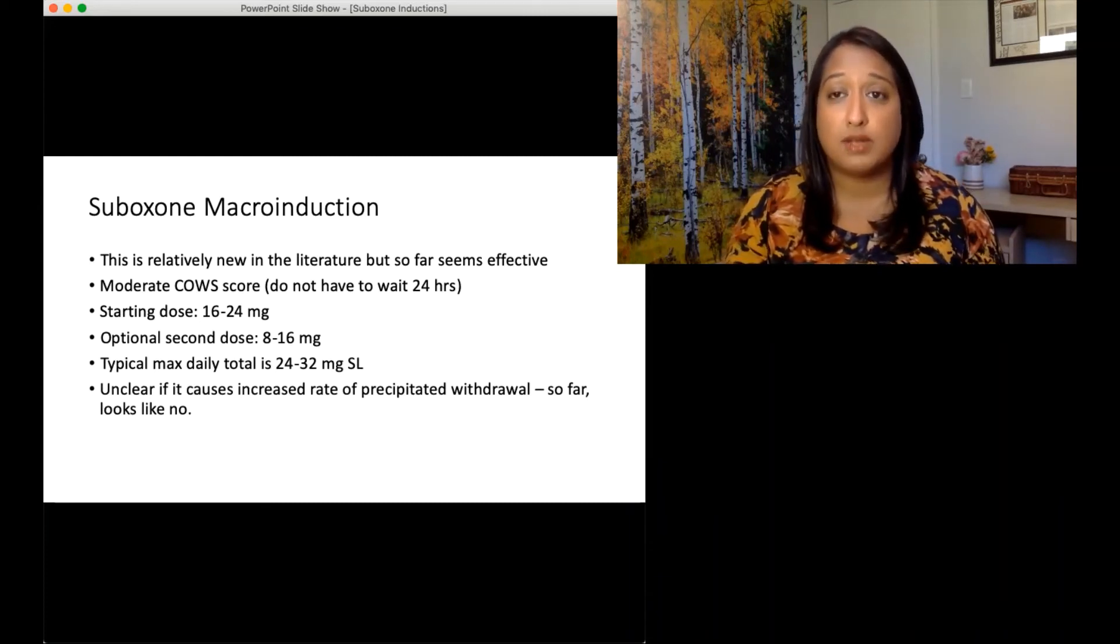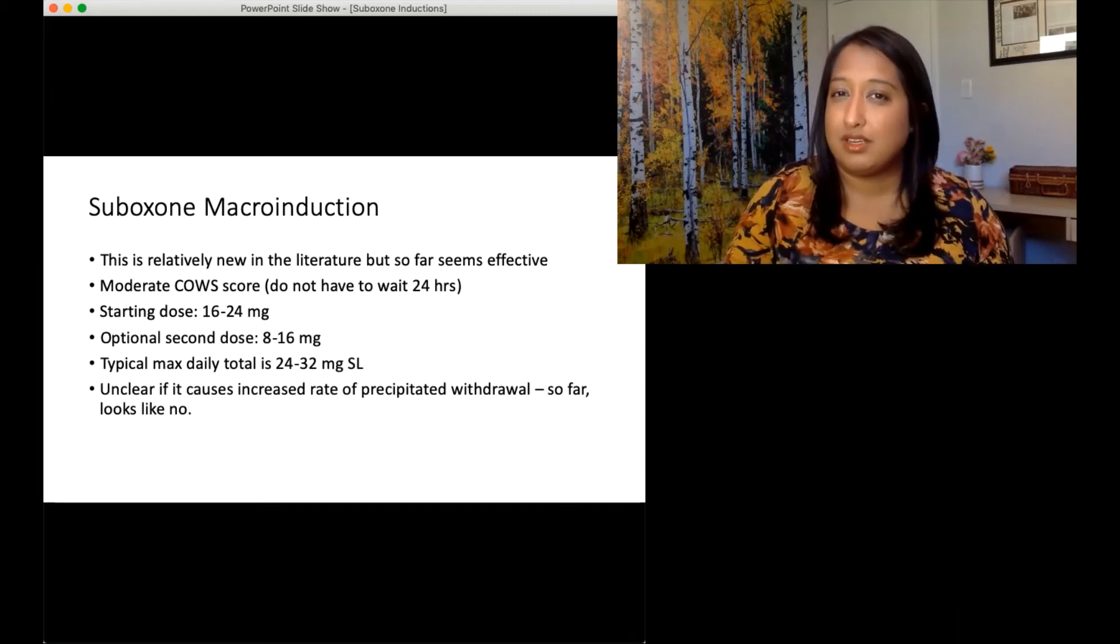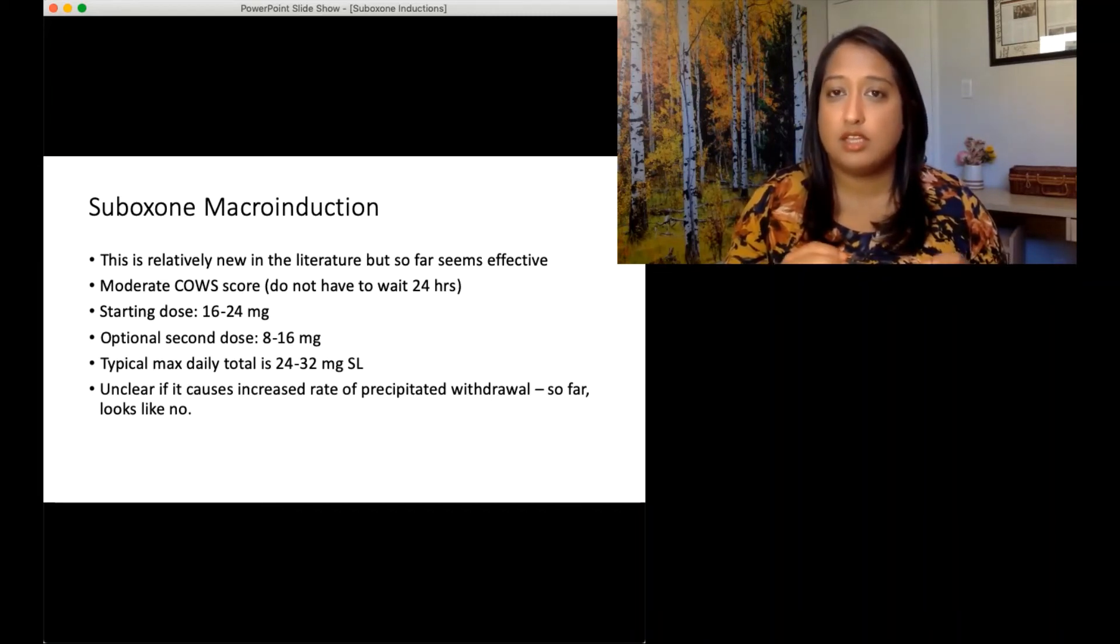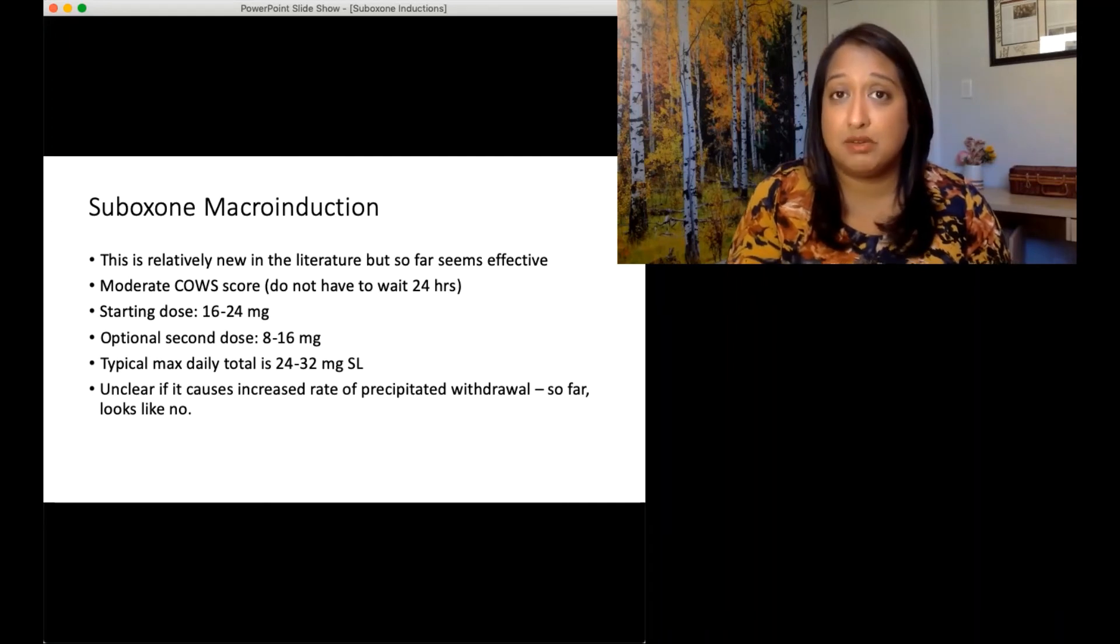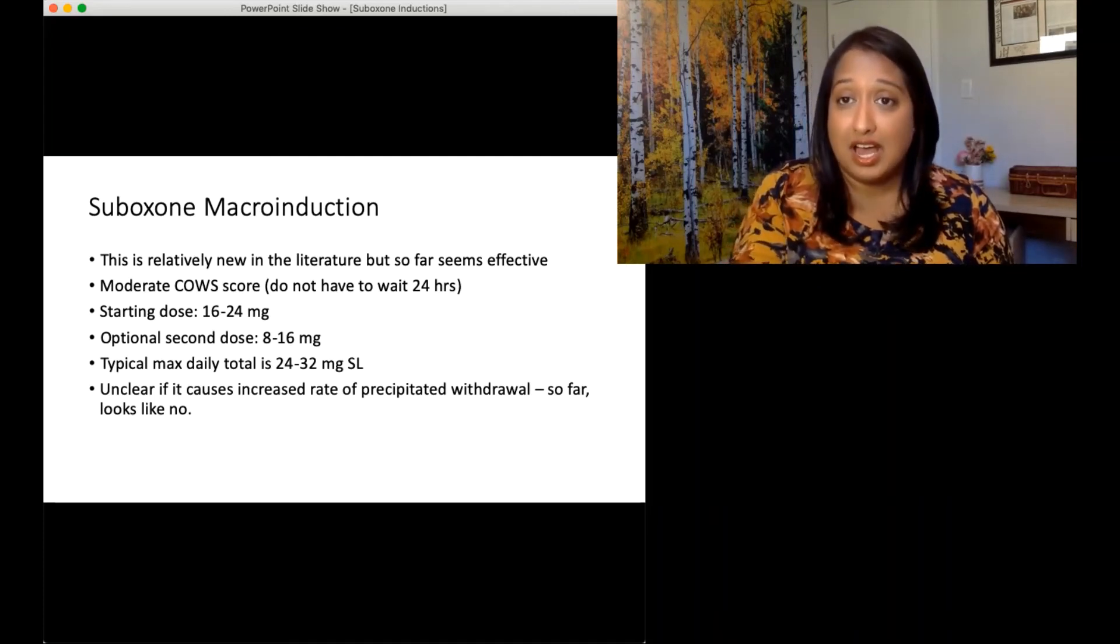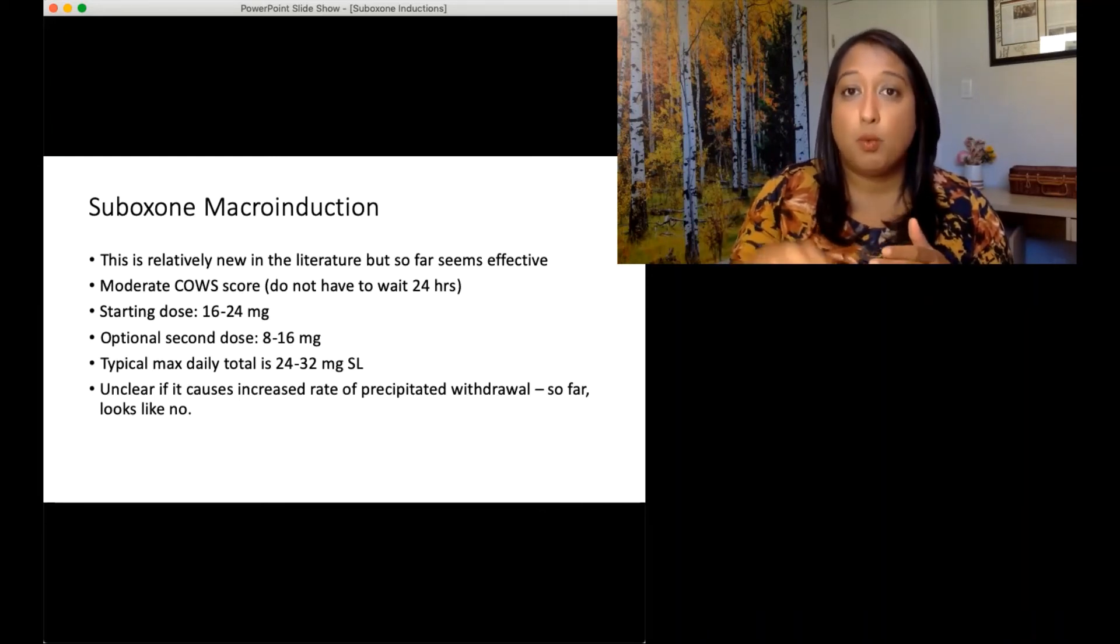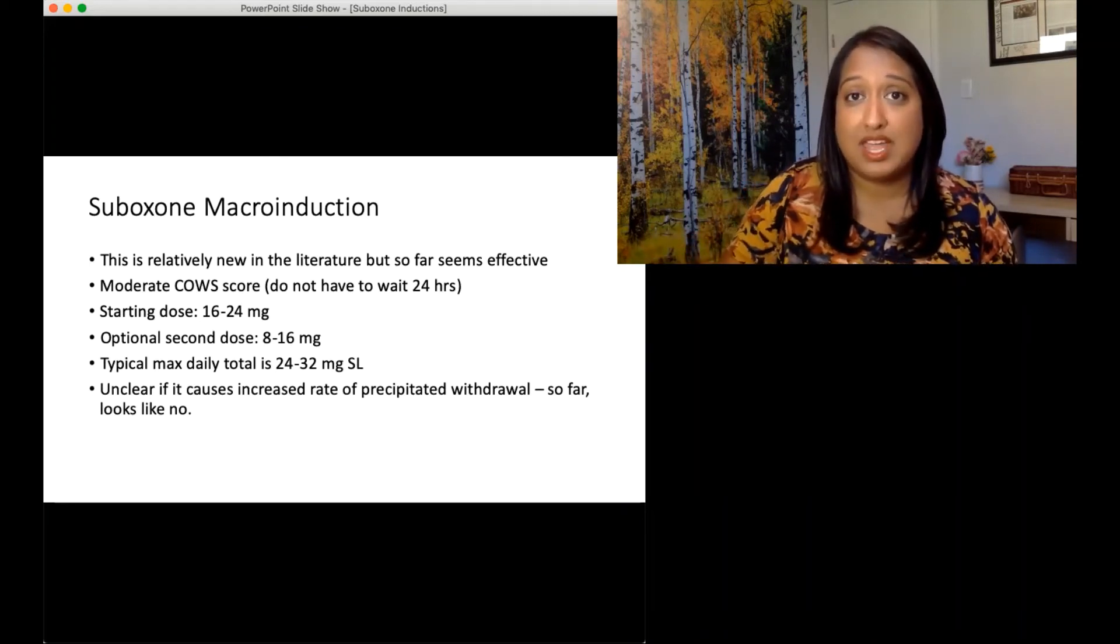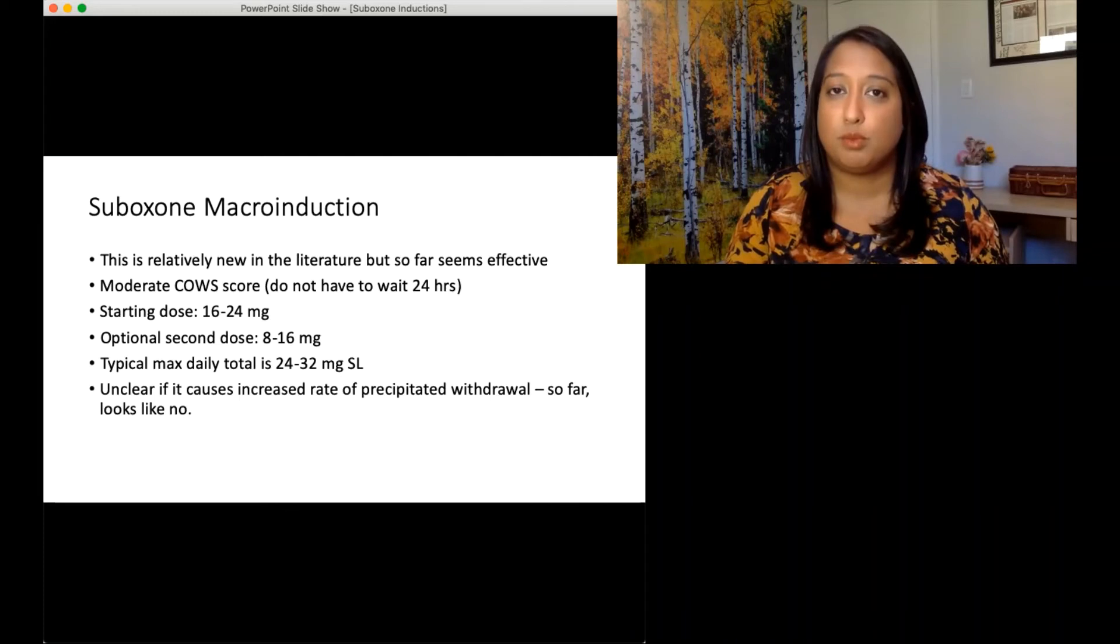So the concept of a Suboxone macro induction is that you don't have to wait that full 24 hours or that 48 hours. You just wait until the patient's in kind of mild to moderate withdrawal. So you don't have to wait even until it's very severe. Then you start with a lot of Suboxone. You start with that 16 milligrams or even 24 milligrams if they're really fentanyl tolerant. And the idea is that it kicks off the other opioids from the receptors. But while it does that, it then fills those receptors right away because we've flooded the system with Suboxone.